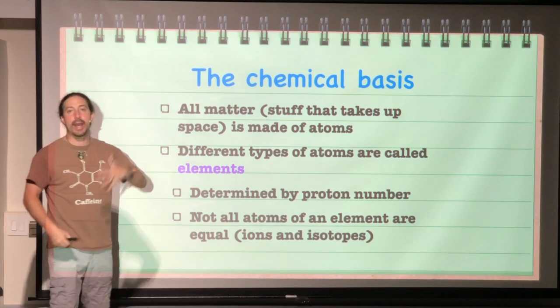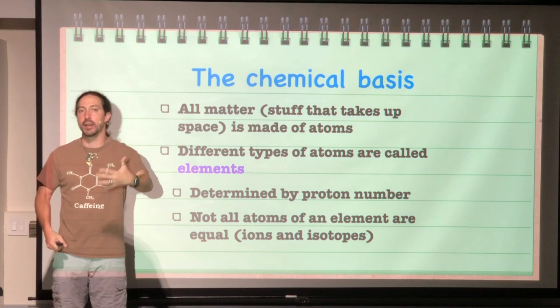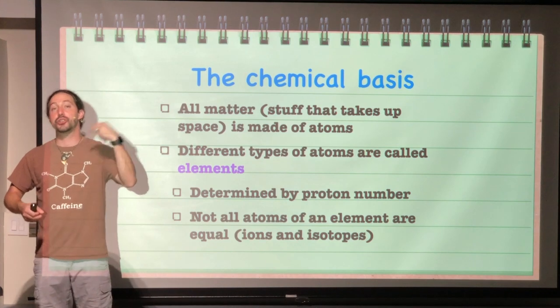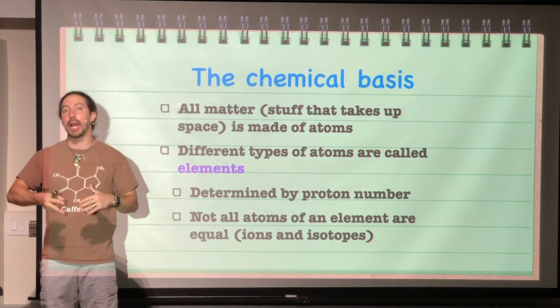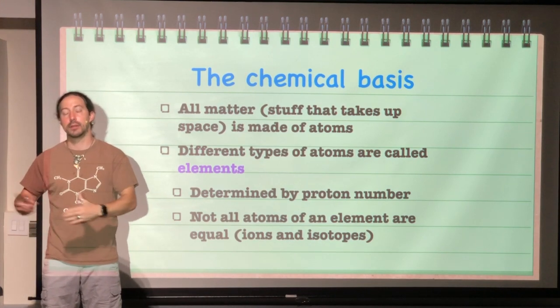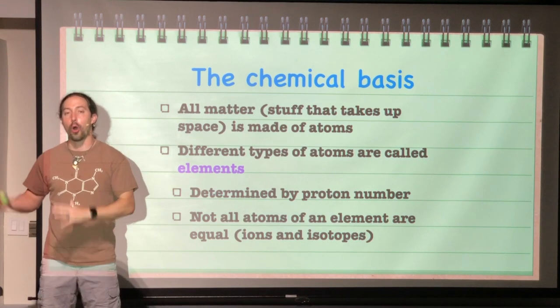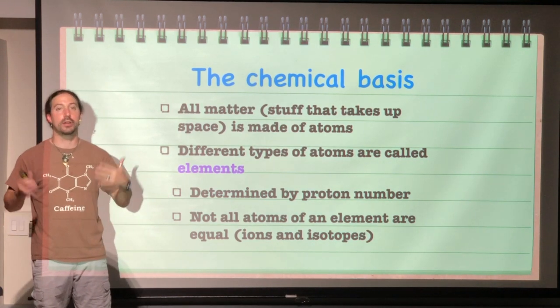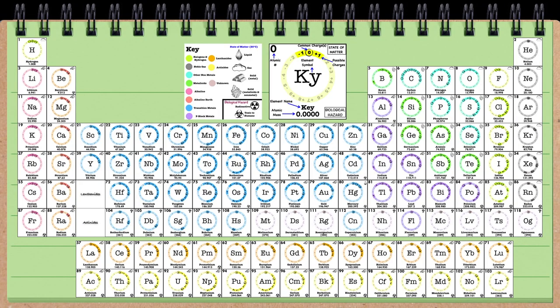So if it has only one proton, then that atom is the element hydrogen. If it has two protons, then it would be the element helium. This goes for all 118 different elements, which we find all outlined on the periodic table.